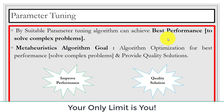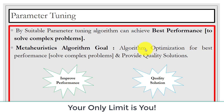Why do we perform parameter tuning in metaheuristic? By suitable parameter tuning we can achieve better performance and solve complex problems. The goal of metaheuristic algorithm optimization is to find the best solution — parameter tuning provides quality solutions and improves overall performance.